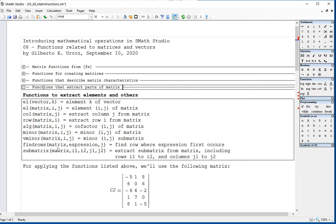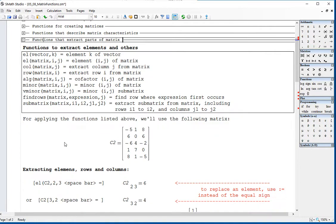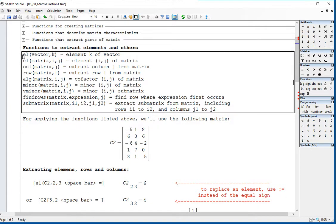We have the following functions that are used for that purpose. The function EL applied to a vector extracts the k element of a vector. The function EL applied to a matrix requires two indices, i and j, and it will extract the element i, j of the matrix.